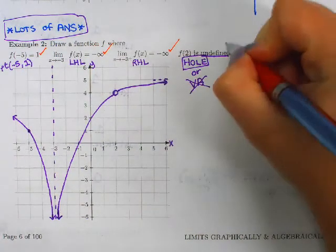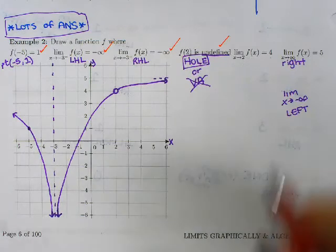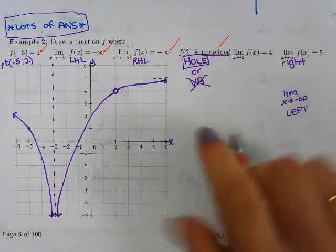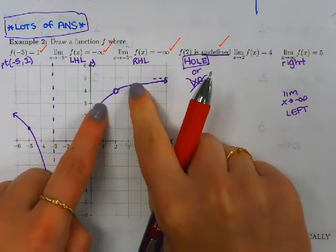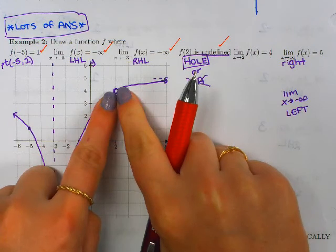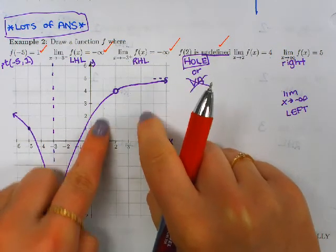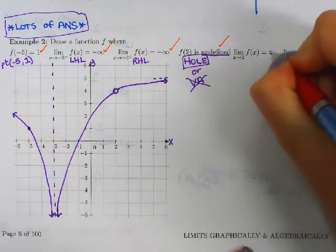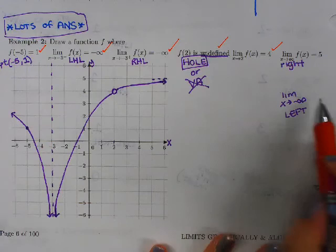Is f of 2 still undefined? Yes, there's no y value above or below 2, so that is still undefined. As we approach 2 from both sides, do we get to 4? Well, let's check. Going in from both sides, they do meet at 4, whether I hop on from the left or the right, they're both going to 4. So we get points for that.